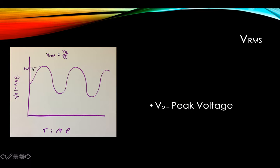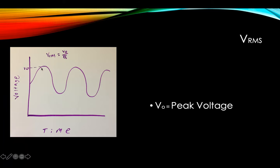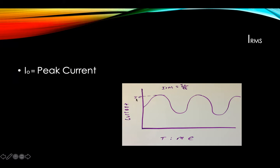Here we have a graph of voltage over time. If we measured a voltage here and a voltage here over the course of one full wavelength, we would square all of those values, average them, and then take the square root of that averaged value — and that would give us the voltage RMS. But luckily we have the equation V-naught over the square root of two. V-naught refers to the peak voltage — the very top of that sinusoidal wave. Similarly, peak current is equal to I-naught.